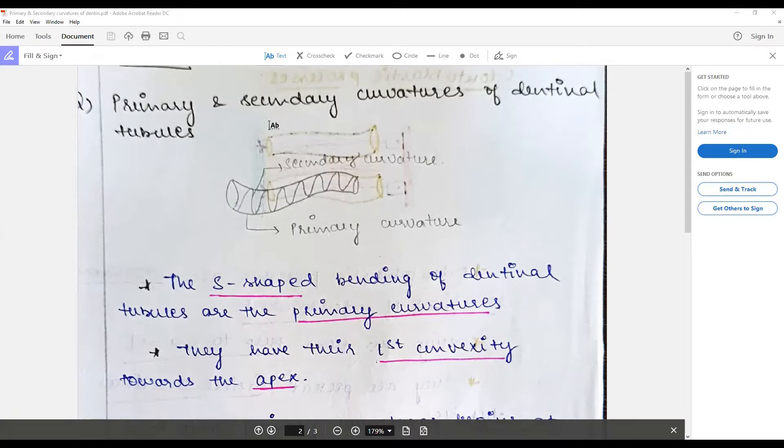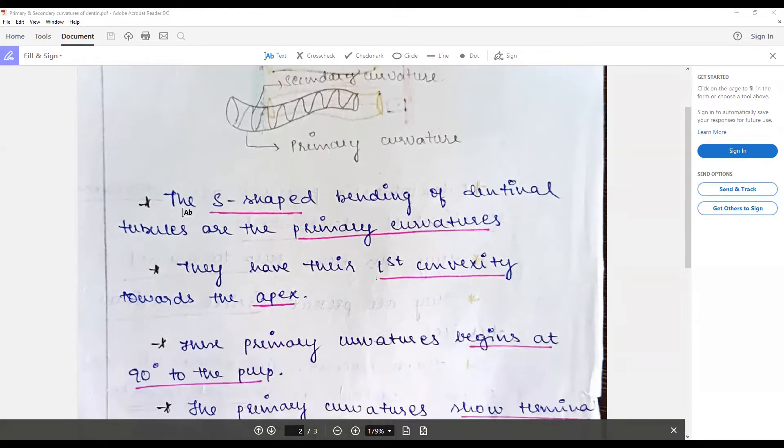As we know, the dentine is an S-shaped tubule, an S-shaped structure with bending of dentinal tubules with primary and secondary curvature.